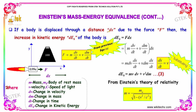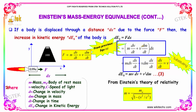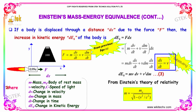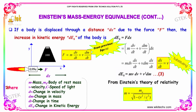If the body is displaced through a distance dx due to force F, then the increase in kinetic energy dEk of the body is dEk = F·dx. Since F = M·dV/dt, replacing it gives dEk = M·dV·dx/dt + V·dM·dx/dt. Since dx/dt is velocity V, and from the theory of relativity, M = M₀ / √(1 − V²/C²), we replace M here.